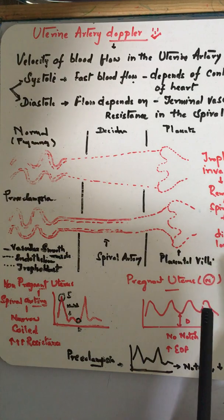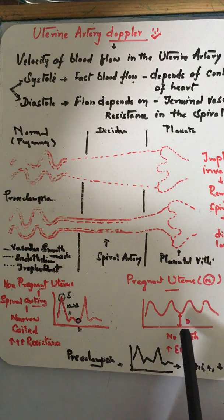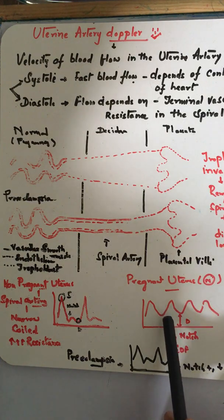In the pregnant uterus, due to trophoblastic invasion and remodeling of the spiral arteries, the vessels are dilated. End-diastolic flow will be more and there will not be any diastolic notch.